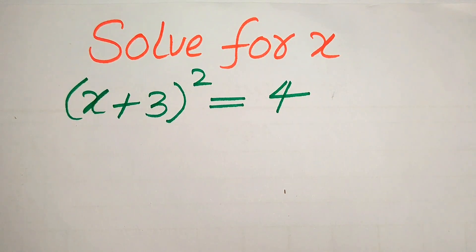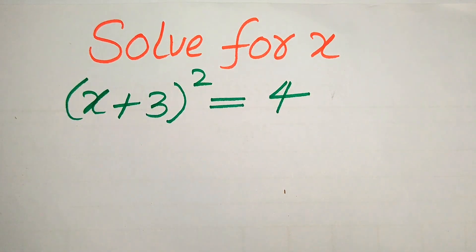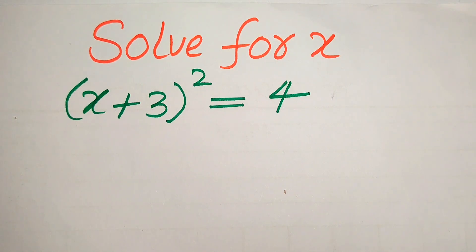Hello everyone. How to solve this problem for the values of x if we have (x + 3)² = 4. We first find the roots of this equation, and at the last we will check which of these roots are solutions and which are extraneous roots of this equation. At the last I will also explain the term extraneous root.